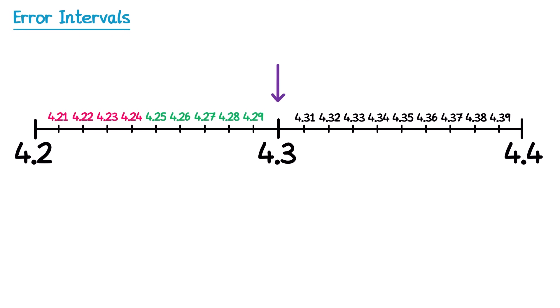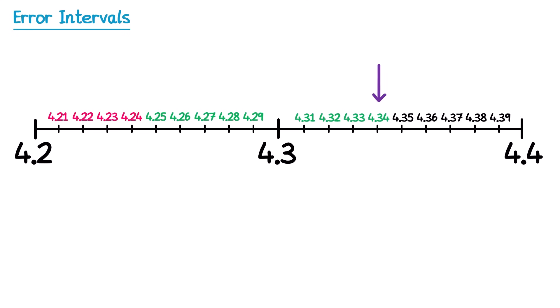Then if we go past 4.3: 4.31 would round down to 4.3, so that one's okay, and so is 4.32, 4.33, and 4.34. But once we hit 4.35 that one would round up to 4.4, so that one's not okay, and nor are the rest of the numbers.